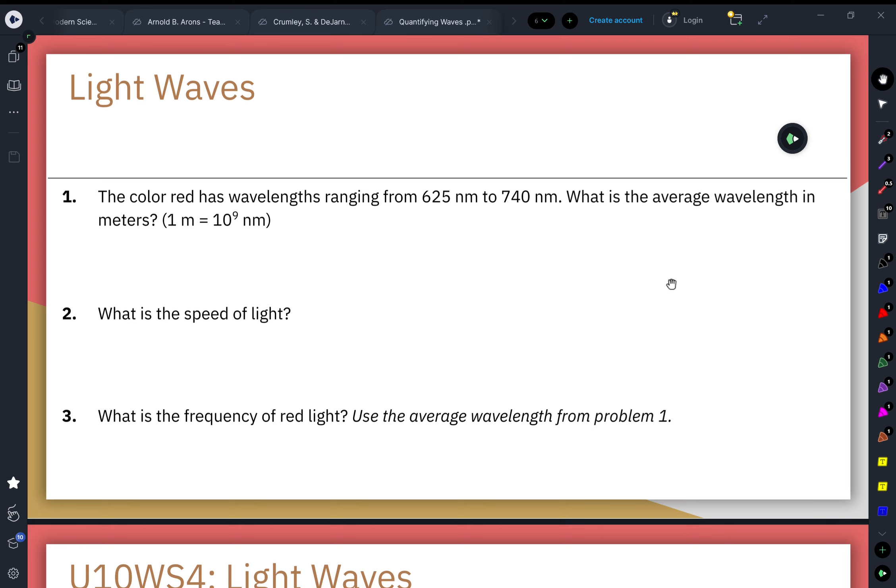Okay, so we're going to talk about quantifying light. The color red has wavelengths ranging from 625 nanometers to 740 nanometers. What is the average wavelength in meters? Every one meter is equal to 10 to the ninth power of nanometers.